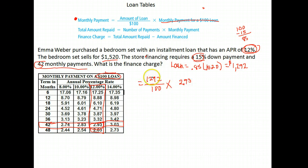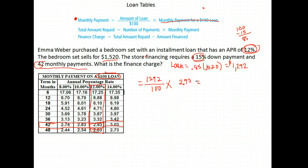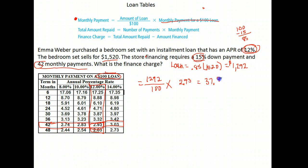That's the amount you pay each month for every hundred dollars. Let's calculate: one thousand two hundred and ninety-two divided by a hundred, times 2.93, gives us thirty-seven dollars and eighty-six cents.